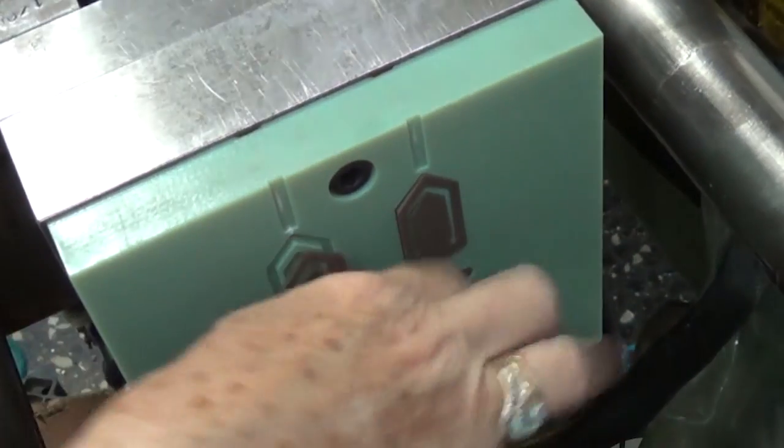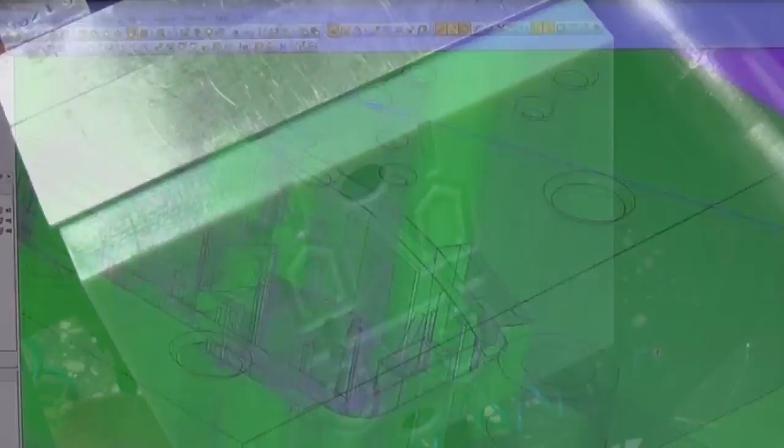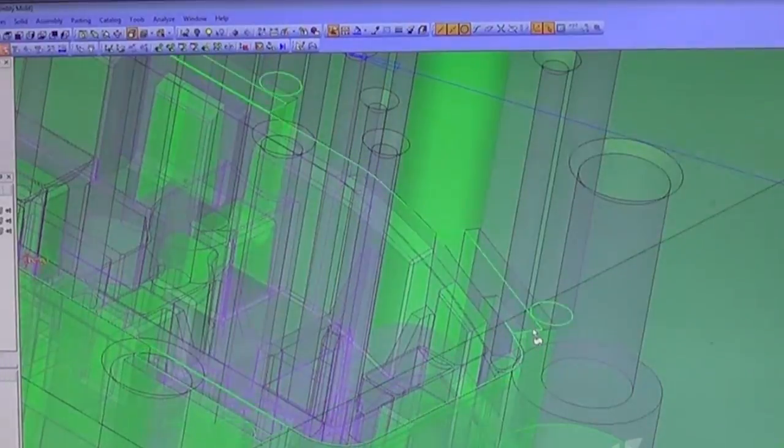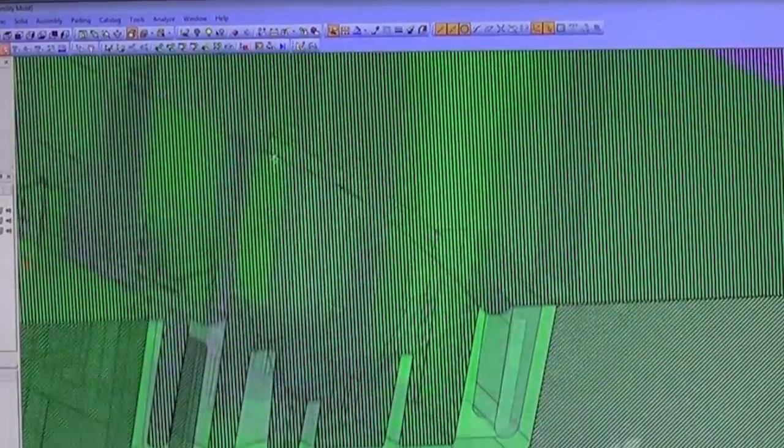Since plastic molds behave a bit differently than metal ones, a few modifications are needed. During mold design, minor adjustments are made to draft angles and shutoffs, for example.